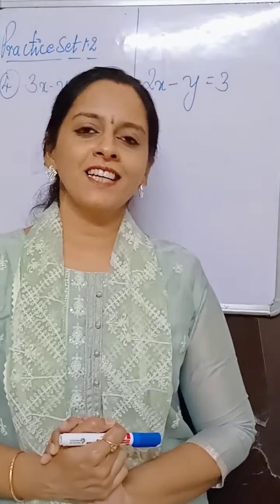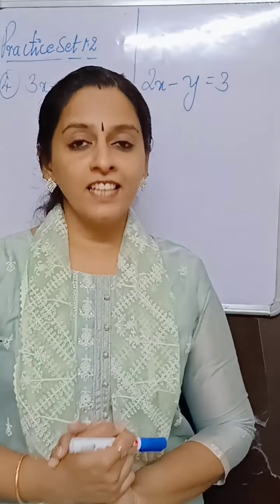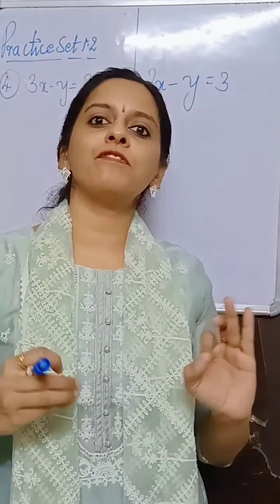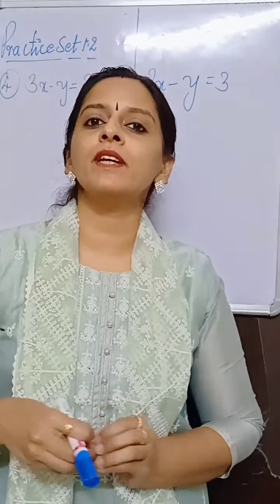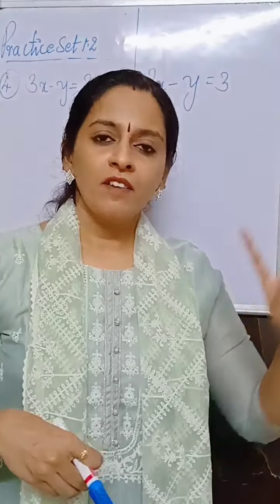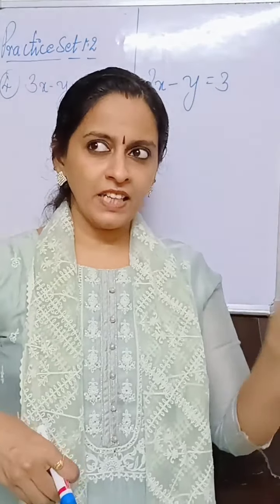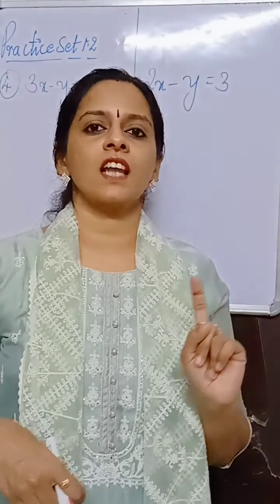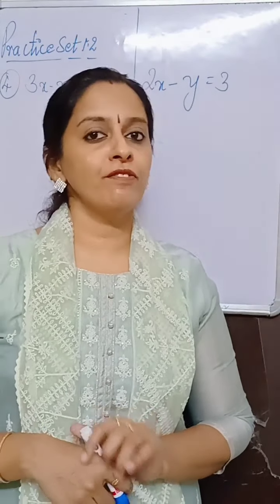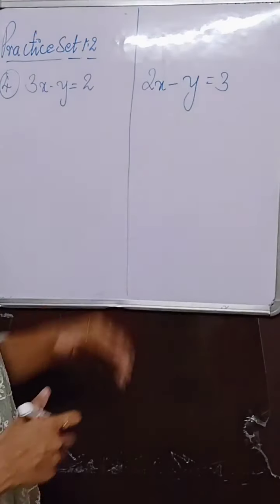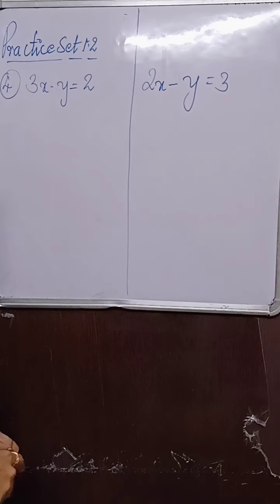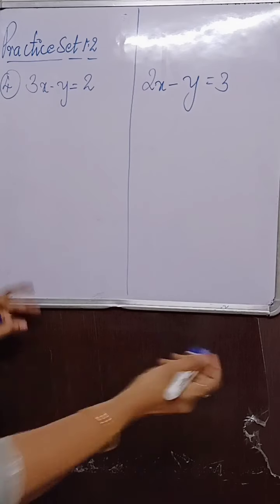Hello and welcome back. This is Chapter: Linear Equations in Two Variables. We are trying to find the solution for simultaneous equations graphically. We had solved sum number 1 and 3 in the previous class. Today we will be solving sum number 4. I have copied the question — we have these two simultaneous equations and we have to find the answer graphically.